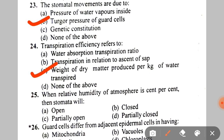Next: when the relative humidity of the atmosphere is 100%, the stomata will A. Open, B. Closed, C. Partially open, D. Partially closed. The correct answer is A — the stomata will open.